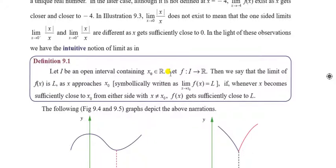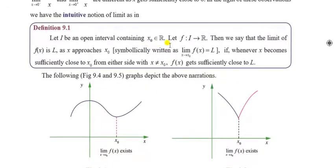Now let us state the proper definition. Let I be an open interval containing x₀ ∈ ℝ, and let f: I → ℝ. We say that the limit of f(x) as x approaches x₀ is L if, whenever x becomes sufficiently close to x₀ from either side (with x ≠ x₀), f(x) gets sufficiently close to L. This is the limit of f at x₀ — meaning from both the left-hand side and the right-hand side, as x approaches x₀, the function value must approach the same value L.